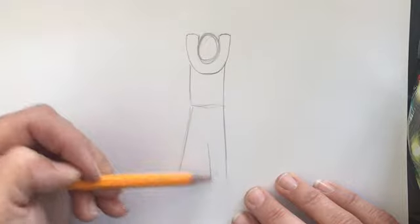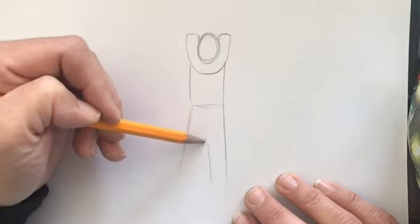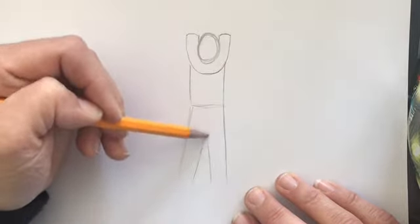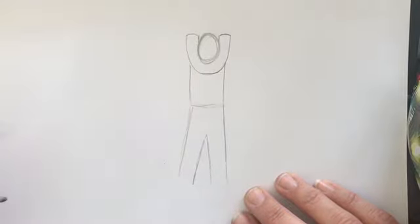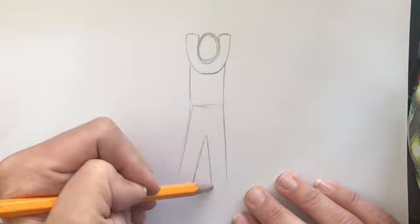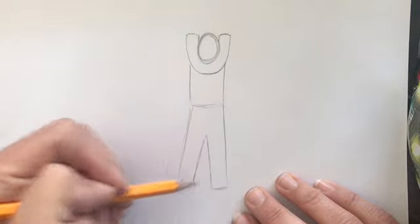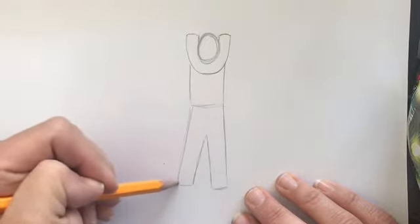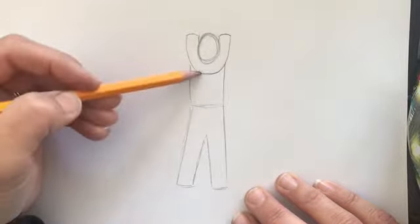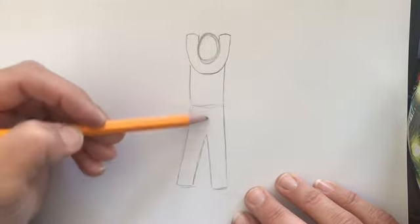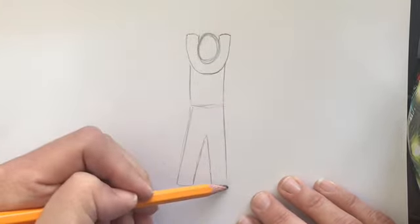Then you can go ahead and complete the lines down here to show where your legs are. So now we've got our arms, our body, and our legs. Now we're gonna do little ovals.